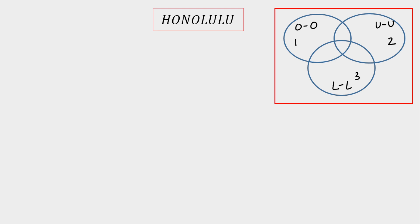Let's label the regions. Area 1, 2, and 3 are the individual-only regions. Area 4 means OO and UU are together at the same time. Similarly area 5 and area 6 are the other pairwise intersections. Area 7 is the common intersection where all three are together. Area 8 is the outside region where nothing is together — and that is my objective.